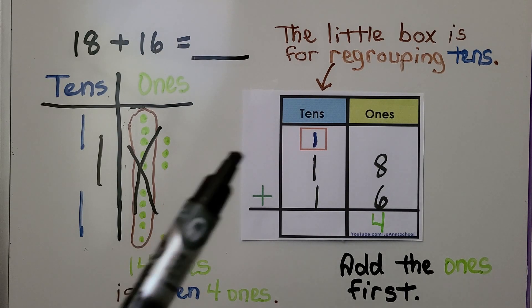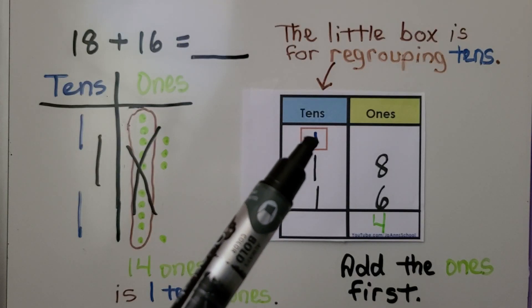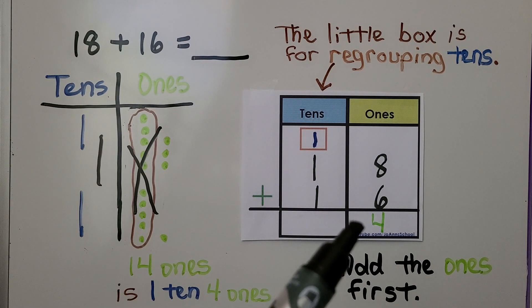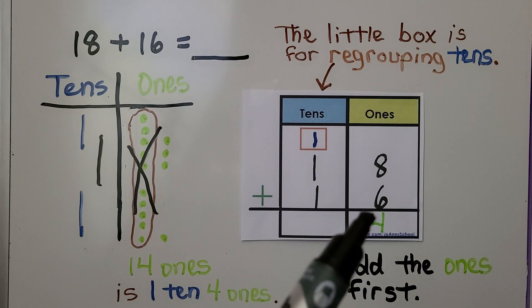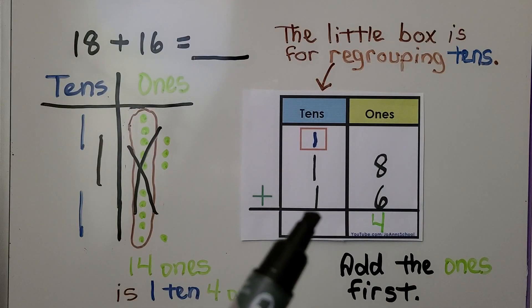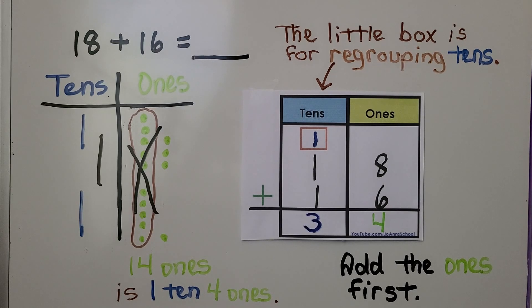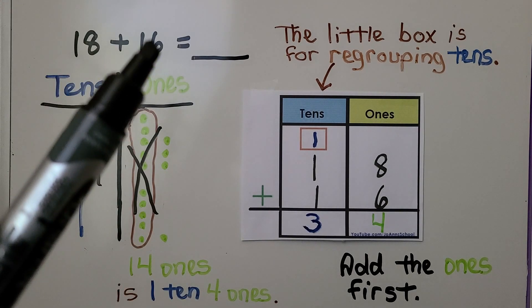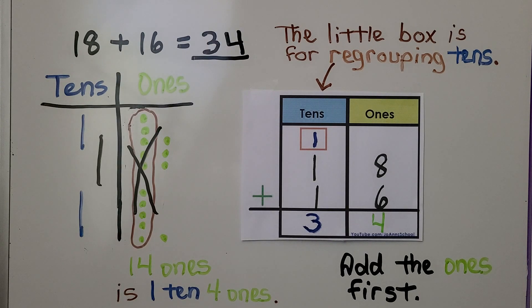We put a little one in the box for the one ten — that's this ten right here. And we have four ones, which we put in the ones column. Now we add the tens: one, two, three tens. That means eighteen plus sixteen is equal to thirty-four.